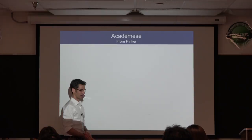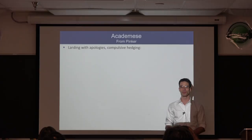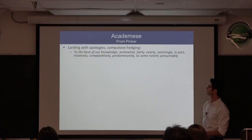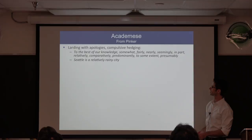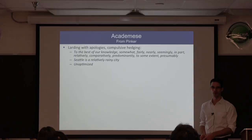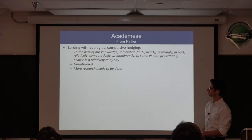One characteristic of academese is larding with apologies and compulsive hedging — phrases like 'to the best of our knowledge,' 'somewhat,' 'fairly,' 'nearly,' 'seemingly,' 'in part,' 'relatively,' 'comparatively,' 'predominantly,' 'to some extent,' 'presumably.' Like you're not sure about what you're saying. 'Seattle is a relatively rainy city' — not compared to Rochester. 'Unoptimized' — of course it's unoptimized, it's a scientific paper done by one or two students. 'More research needs to be done' — of course, that's why they call it research.